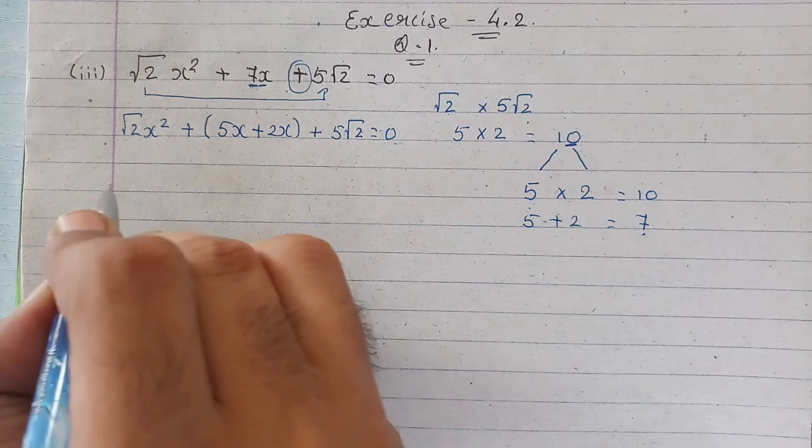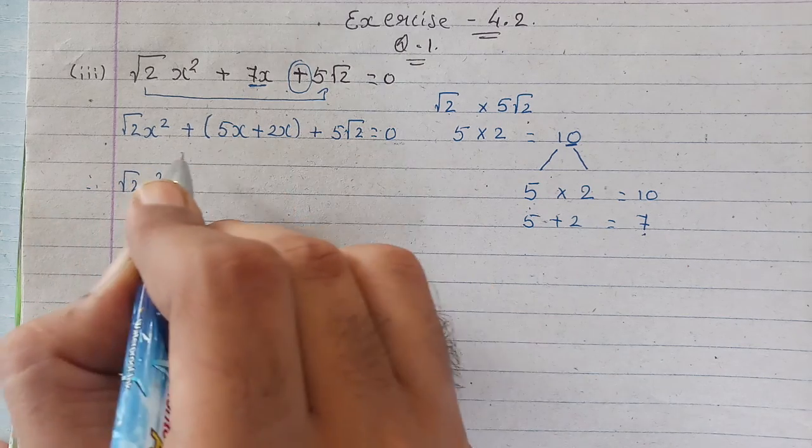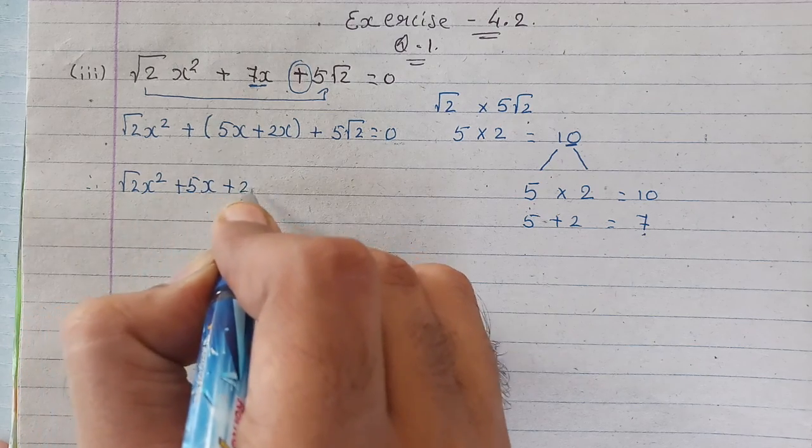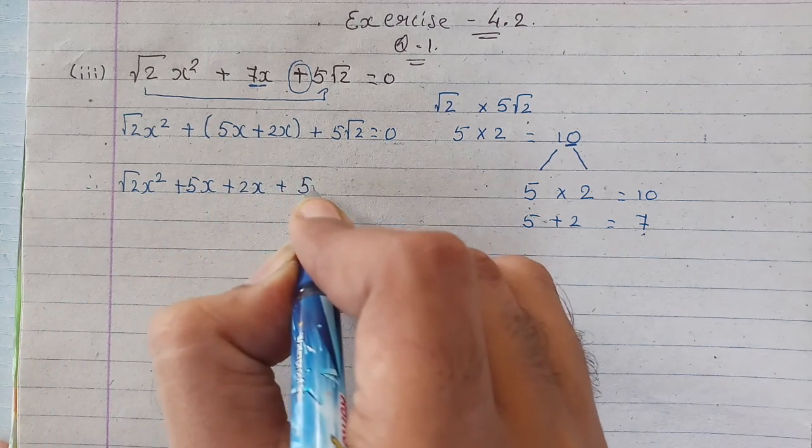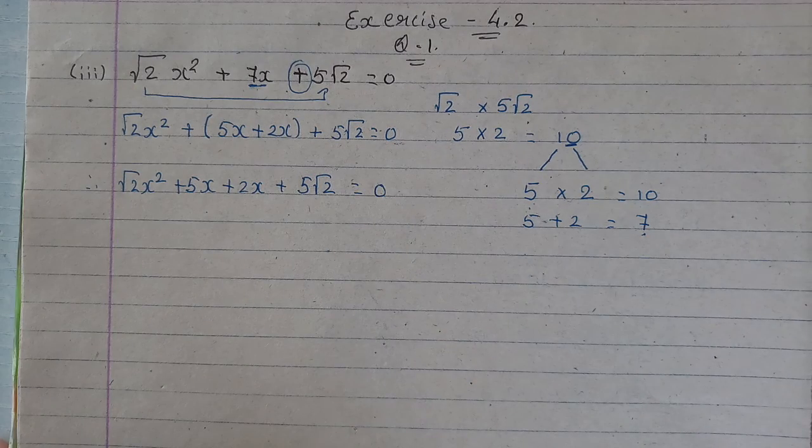Now second step, root 2 x square plus half bracket open, so nothing will change. So we will have plus 5x plus 2x plus 5 root 2 is equal to 0.